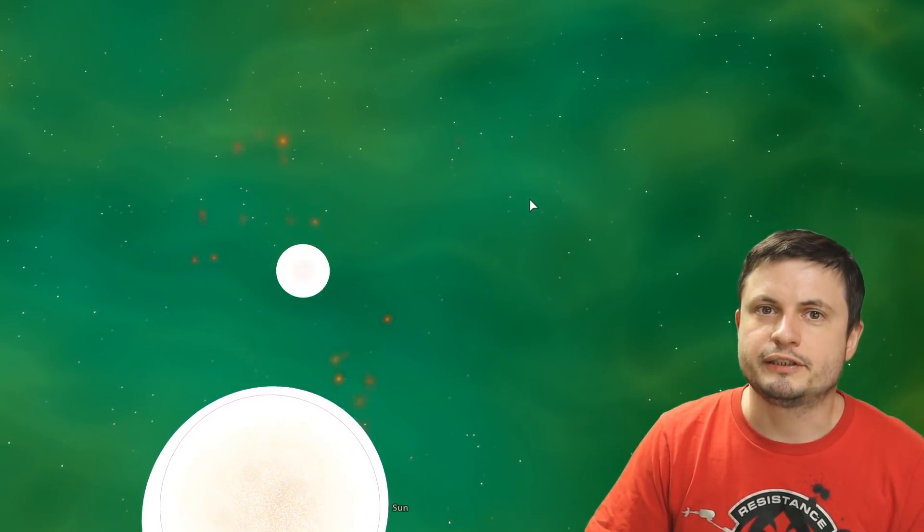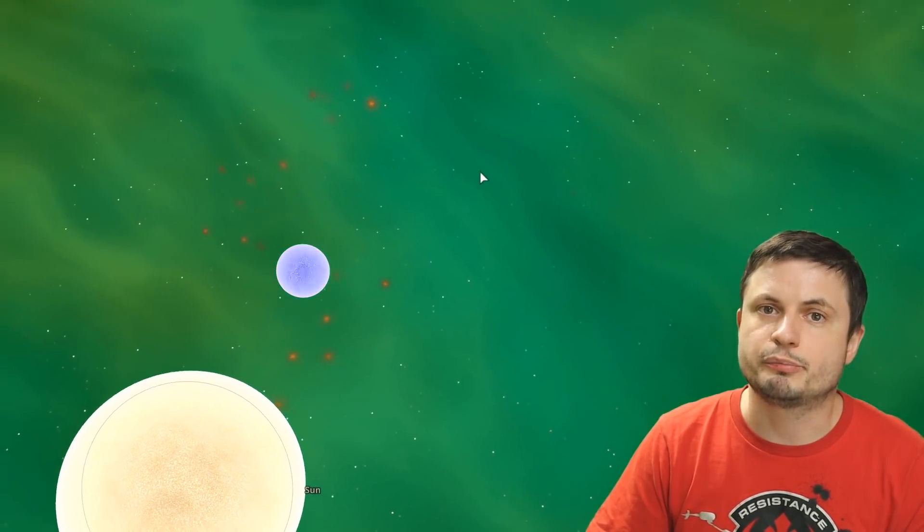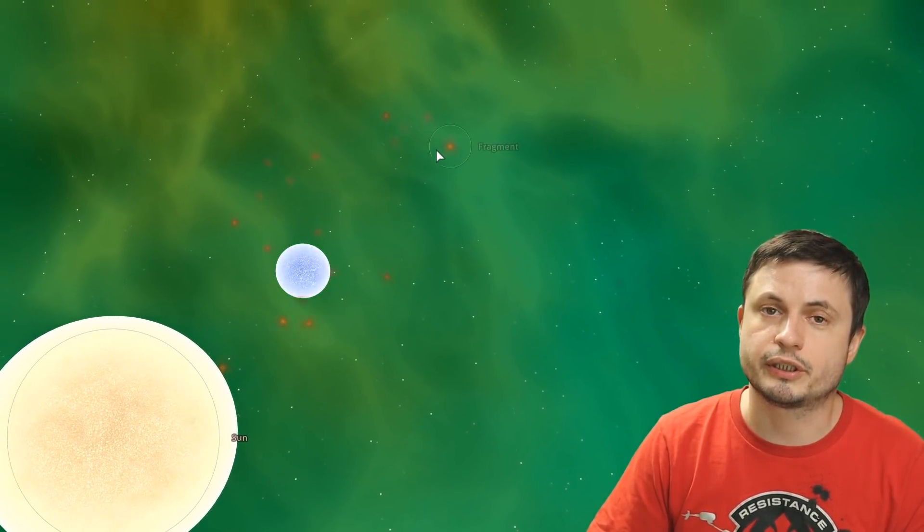And interestingly even in this simulation you can kind of see what's already happening here. The exchange of material and the spiraling of material toward the star is actually one of the main reasons we're observing what we're observing. In other words one of the main reasons why these unusual shapes were created.